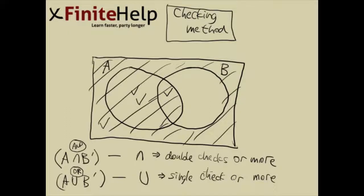And union is going to be single check or more. And then you just check off each area and see where there is an intersection or union, and then include however many checks.